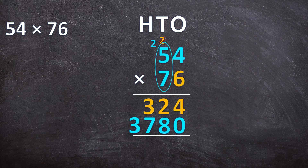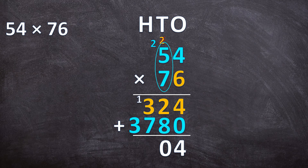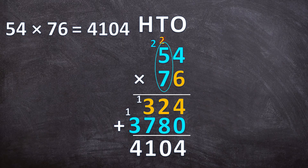Now that we have both answers, we add them to get our final answer. 4 plus 0 is 4. 2 plus 8 is 10, so write down 0 and carry the 1. 3 plus 7 is 10, plus that 1 is 11, so write down 1 and carry the 1. And now we only have 3 plus that 1 is 4. So 54 times 76 is 4,104.